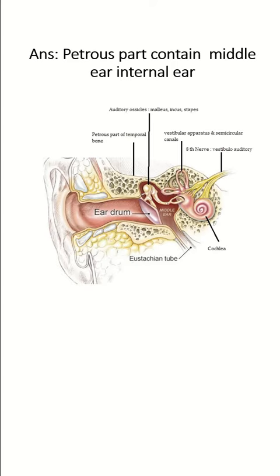The most important part of the temporal bone is the petrous part of the temporal bone, which contains the middle ear cavity and the internal ear.